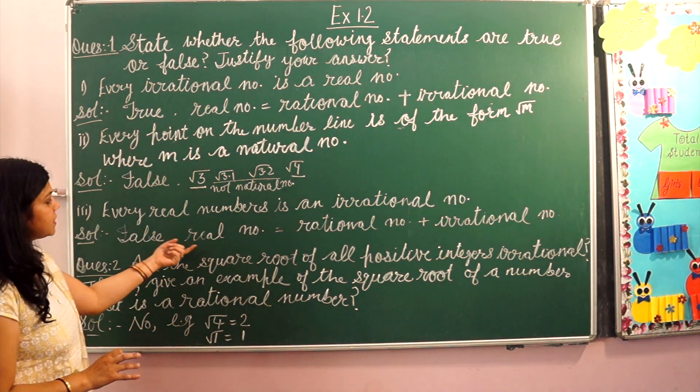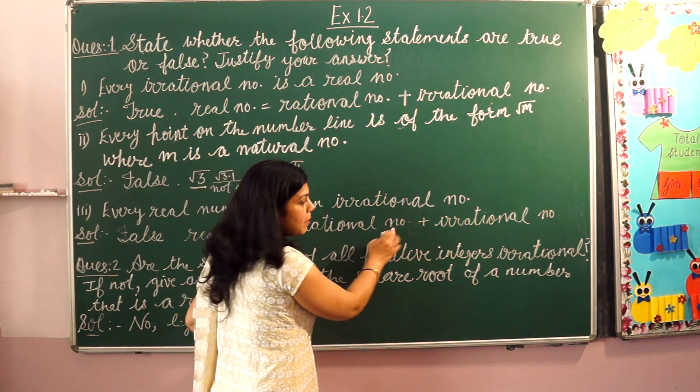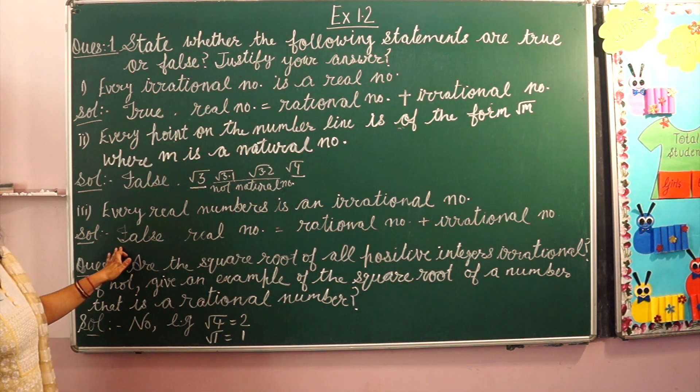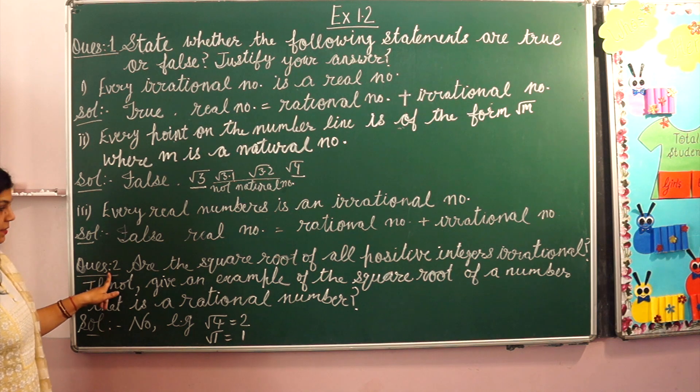Because all irrational numbers can be real numbers, but all real numbers cannot be irrational numbers. Real number equals rational number plus irrational number. So this statement is false.